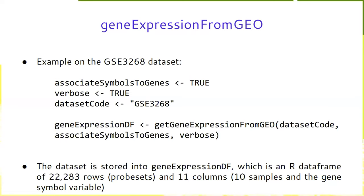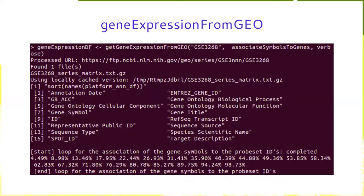The call is a very simple one-liner: GEOfromGEO(dataset_code, associated_symbols_to_genes, verbose). This command downloads the dataset and associates the gene symbols. We save the data into a variable 'gene_expression_df', which is an R data frame of approximately 22,000 rows — the probe sets — and 11 columns: 10 samples from the dataset plus a gene symbol column. This is a screenshot of the execution of this command.